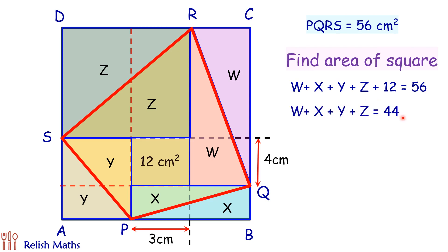So let's check the area of square. Area of square will be nothing but area of this quadrilateral PQRS plus w plus x plus y and z. We know that quadrilateral area is 56 given in question, and w plus x plus y plus z that's 44, so area of square will be 56 plus 44 or 100 centimeter square and that's our answer.